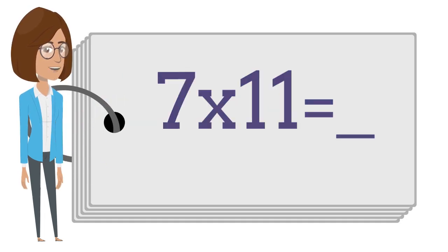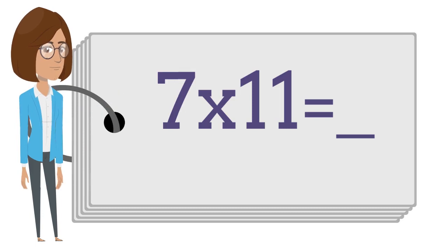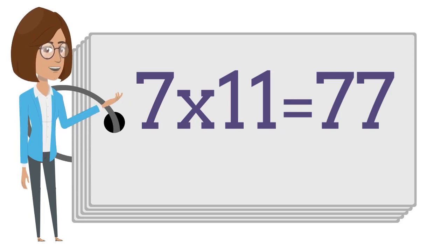7 times 11 is — say the answer out loud. 7 times 11 is 77.